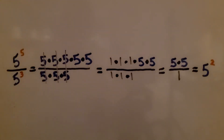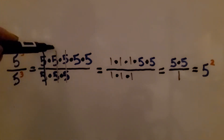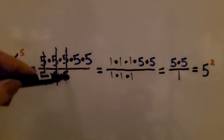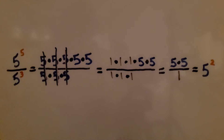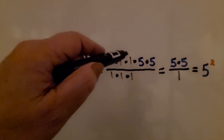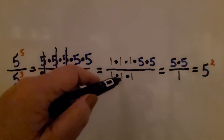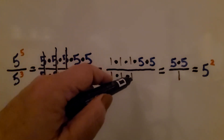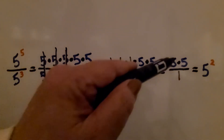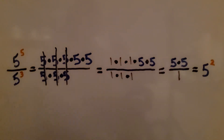For those who are confused, lining them up may help. Same numerator and denominator cancel three times, giving us 5 times 5 over 1 times 1 times 1, which is 5 to the second power.